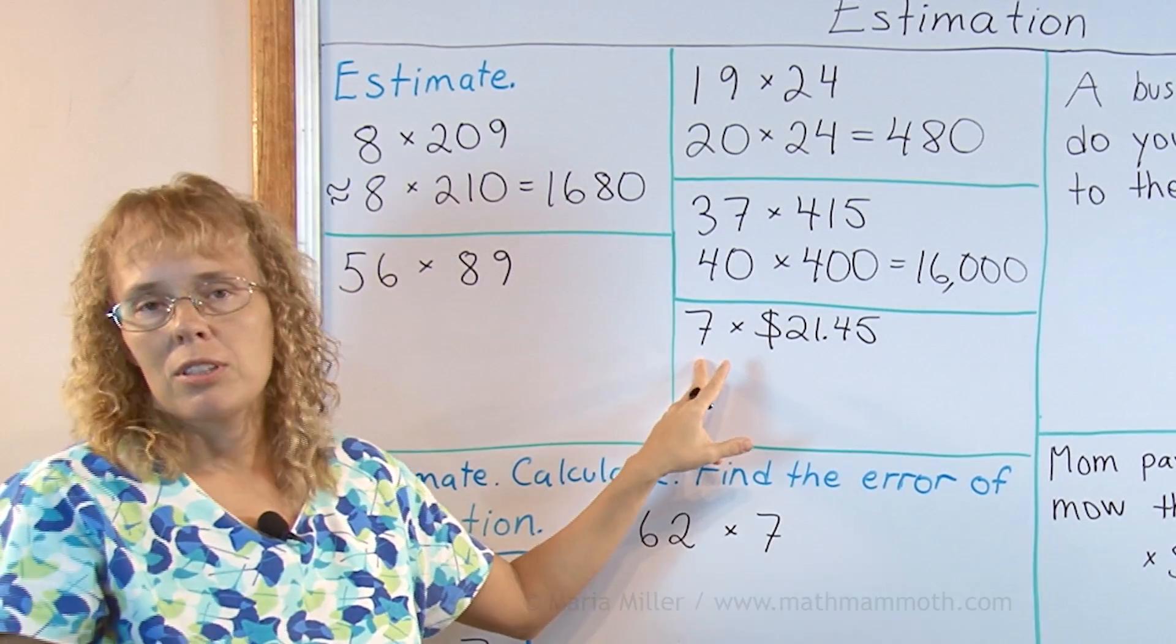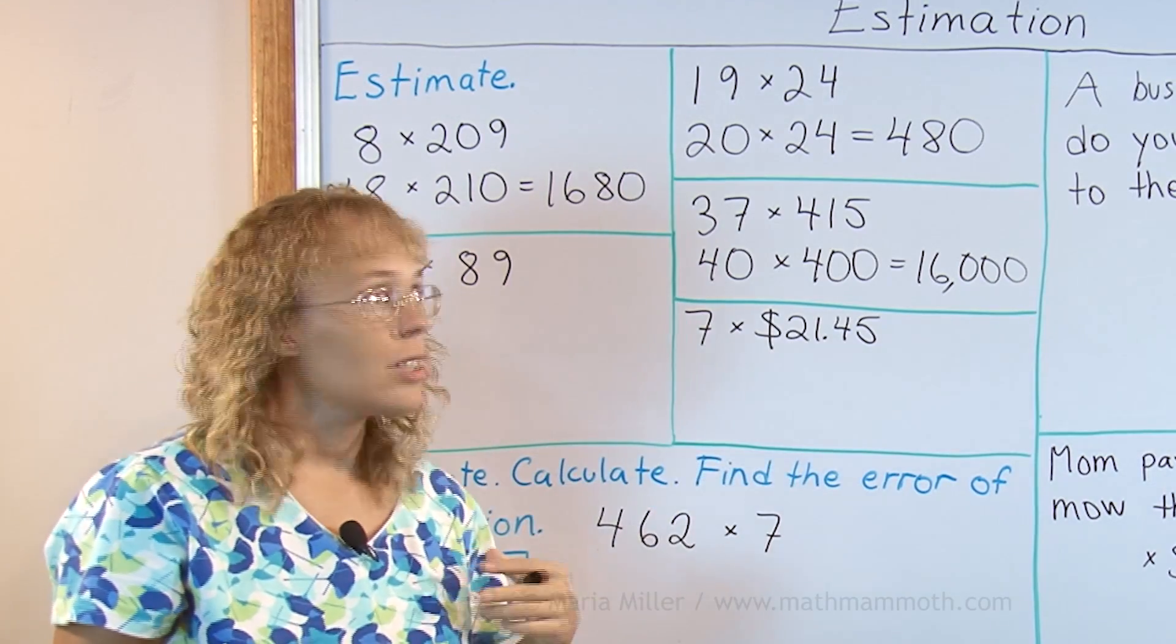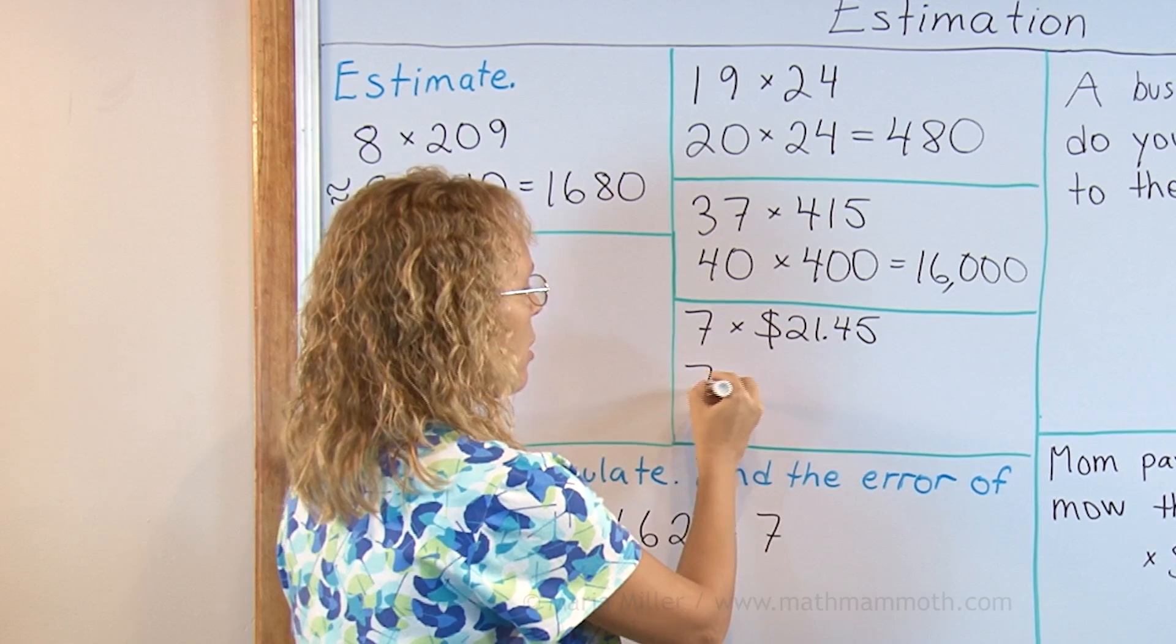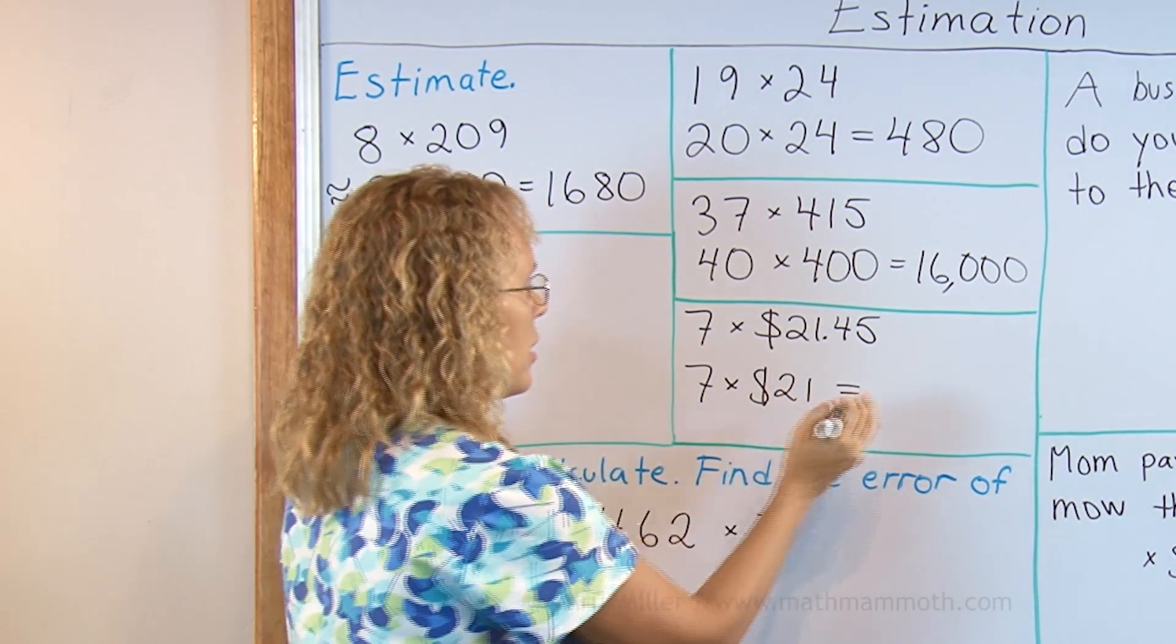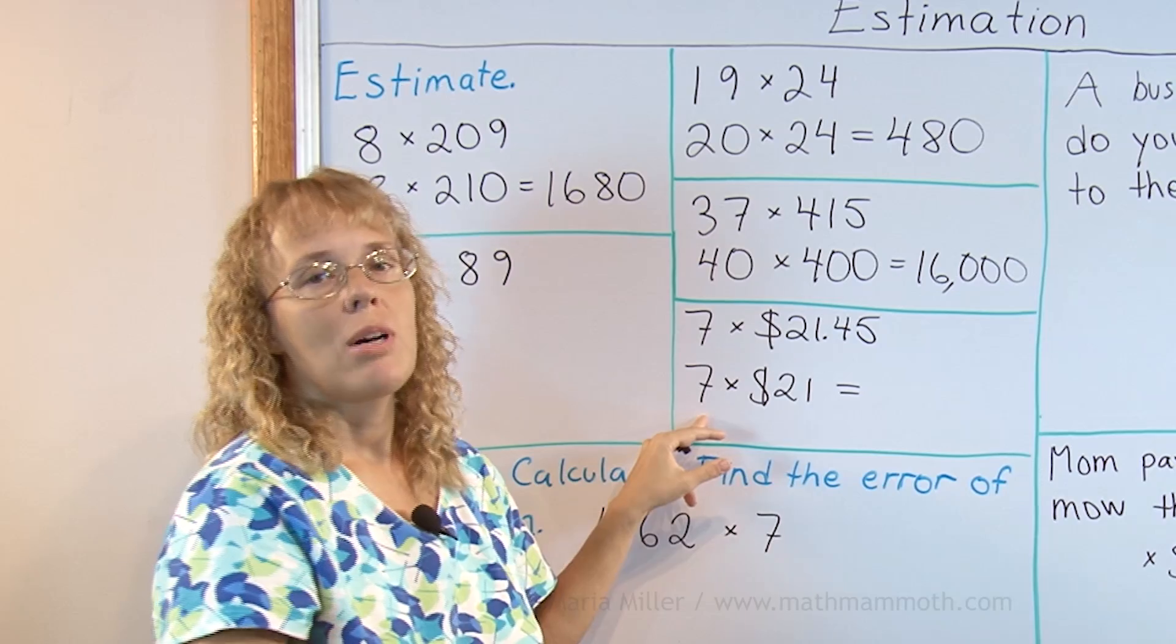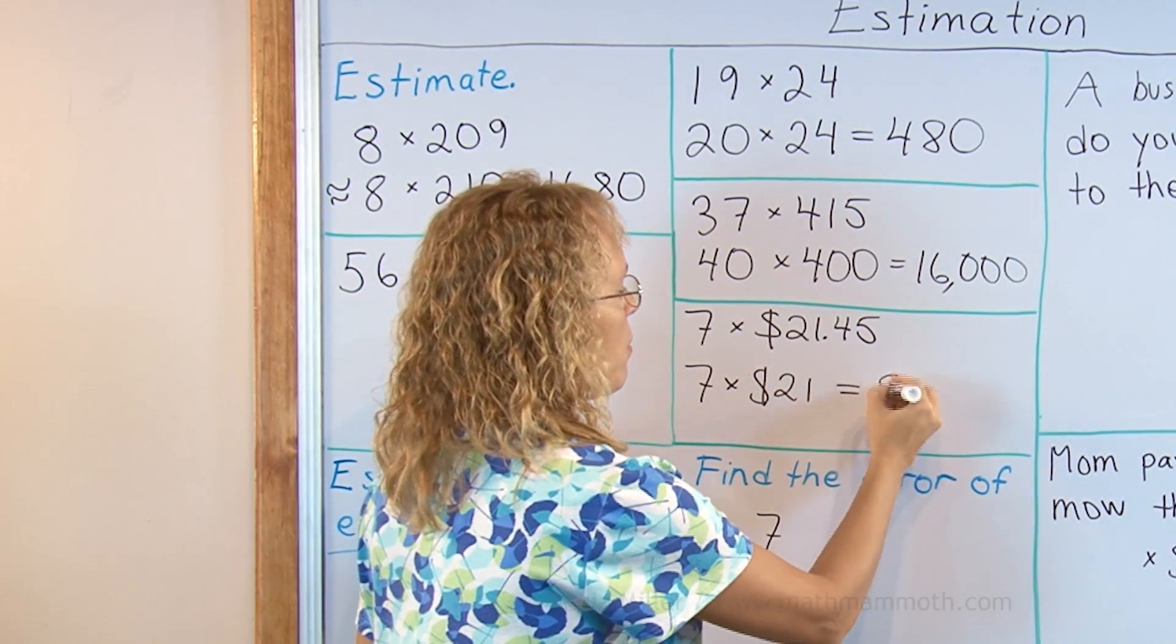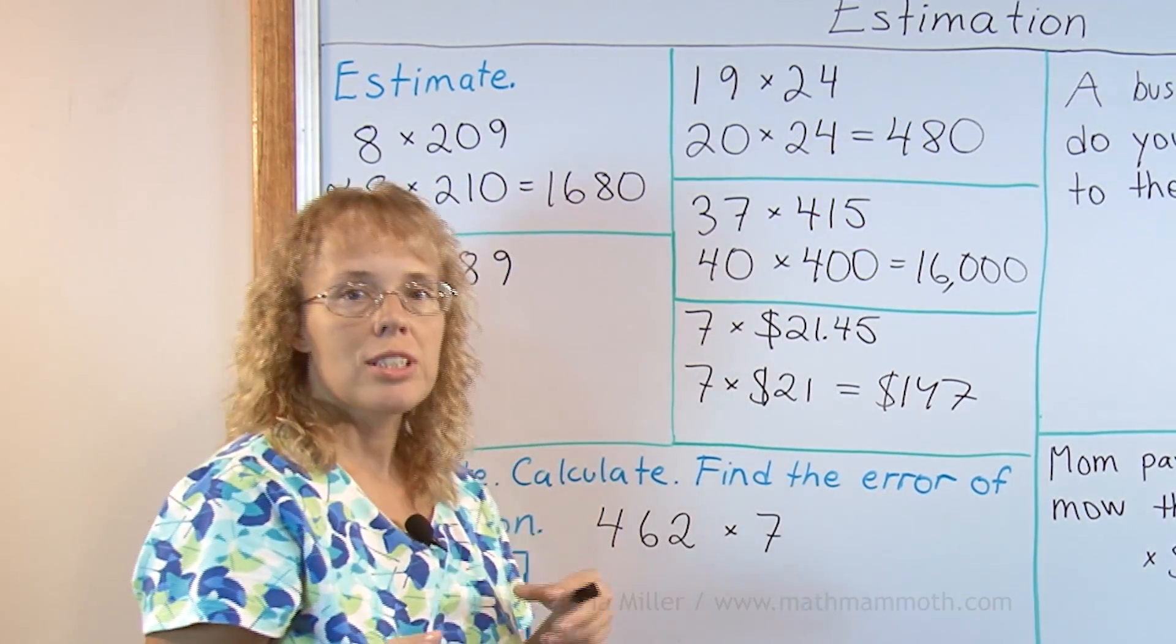A money amount works just the same. We can round it for example here to 20 dollars and get about 140 dollars. Or since it's not that difficult to multiply mentally we'll just leave it as 21 dollars and this is now 7 times 20, 140, and then 7 times 1 which is 7. So 147 dollars about. In reality of course it's a little bit more.